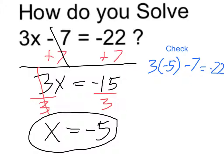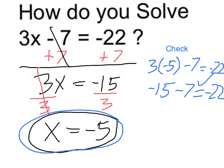So 3 times negative 5 is negative 15, and negative 15 minus 7, yes, that is equal to negative 22. So it does check out, and I've confirmed that the solution, the value which makes it true, is x equals negative 5. Thank you.